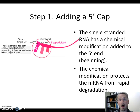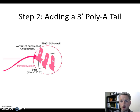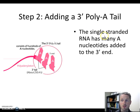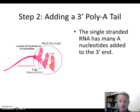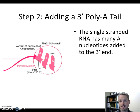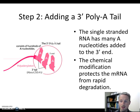In step two, we protect the other end of the RNA molecule by adding what we call a 3' poly-A tail. We take the single-stranded RNA and attach many A nucleotides to the 3' end. 'Poly' just means many — we're adding many A's to the tail end of the RNA. Just like the 5' cap, this 3' tail also protects the RNA from rapid degradation, stabilizing it so we can use it many times.